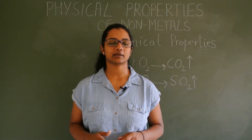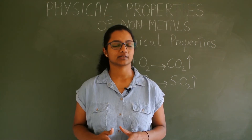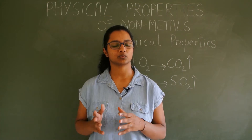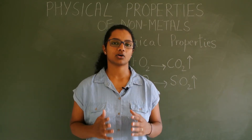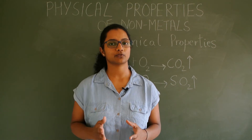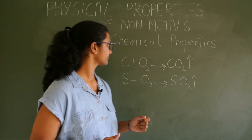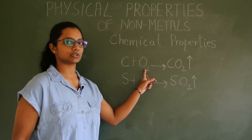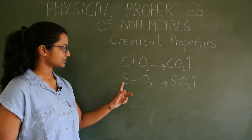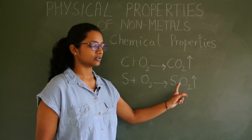Now let us study the chemical properties of non-metals. Non-metals react with oxygen but they don't react with water and dilute acids. When non-metallic substances react with oxygen, they form non-metallic oxides. For example, when carbon reacts with oxygen it forms carbon dioxide. Similarly, when sulphur reacts with oxygen it forms sulphur dioxide.